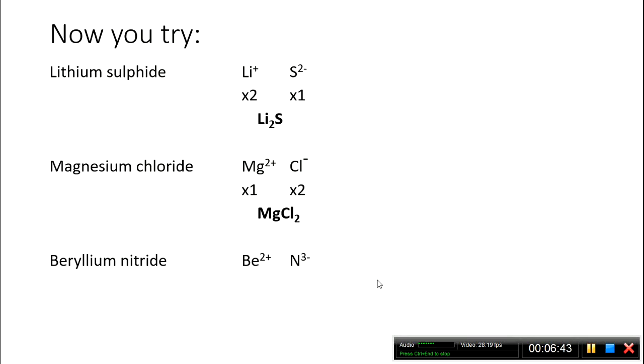Beryllium nitride. Here, I've got a 2+ charge and a 3- charge. The lowest common multiple is 6. To get a 6+ charge on my beryllium, I need 3 of them, and on the nitride, I need 2. Overall, this is Be3N2.